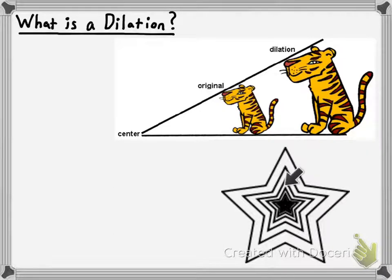Here we've got this star which is being reduced in size quite a lot. There's a reduction, another reduction, another reduction, another reduction — we keep reducing the size of that star. Those are all examples of dilations.